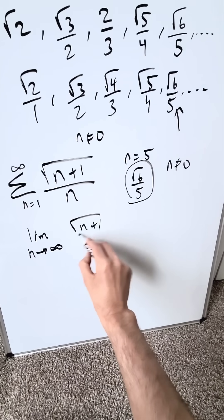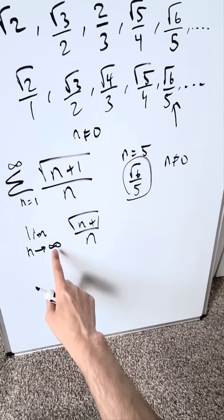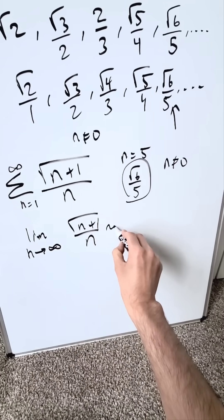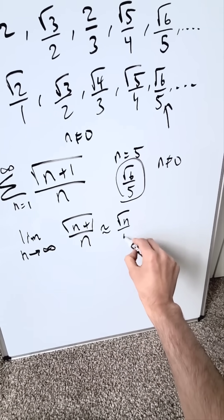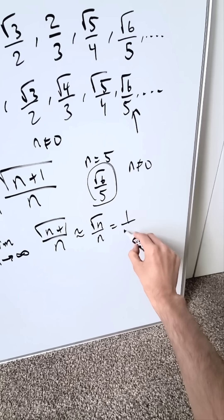I'm looking at root N plus 1 divided by N. Since we're evaluating something at infinity, the plus 1 becomes meaningless. In essence, you're doing root N over N. If you simplify it, you're doing 1 over root N.